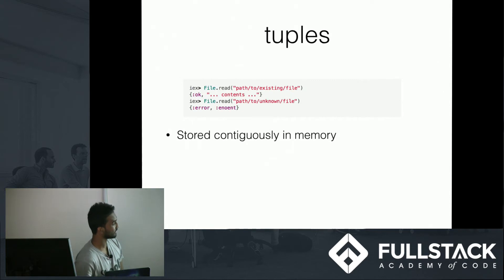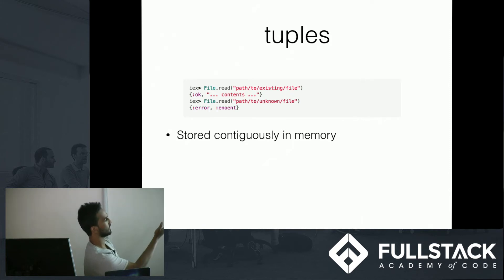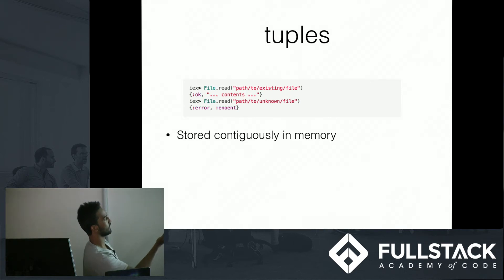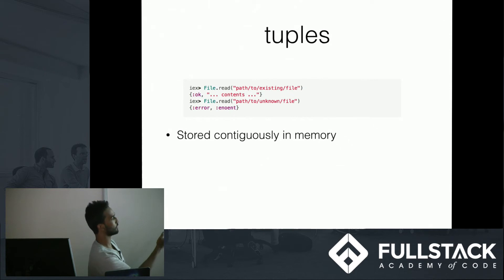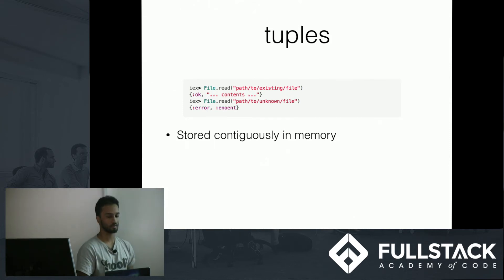We have tuples, which are a set of related items. Pretty commonly, for example, you do File.read(file) and you'll get back a tuple where the first item could represent status — either okay or error — and the second item could be the error message or the file contents. Tuples are stored contiguously in memory, so it's kind of like an array.